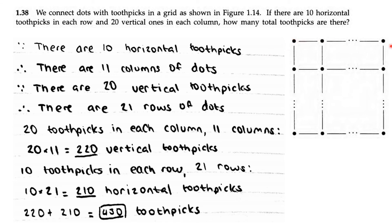Because if there's 1, 2, 3 all the way to 10, each one has a dot, so there's 11 columns of dots. Same reasoning: since there are 20 vertical toothpicks, that means there are 21 rows of dots. So if there are 20 toothpicks in each column and there are 11 columns, that means 20 times 11, which is 220 vertical toothpicks.